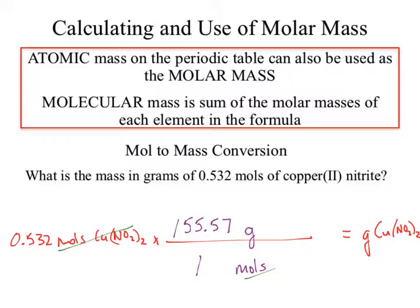But what happens if I want to convert copper nitrite to something else through a chemical reaction? Now I really need to know what the grams and moles are referring to because another species has appeared. That's chapter 9. If I don't use the correct unit, I may end up using the wrong molar mass because I didn't include the substance tied to that unit.